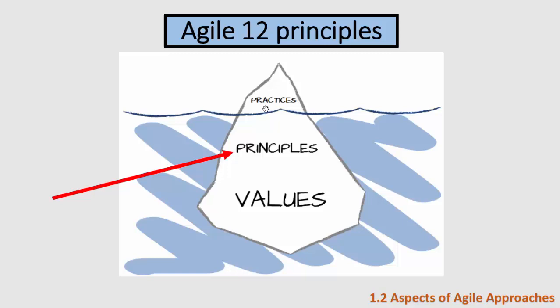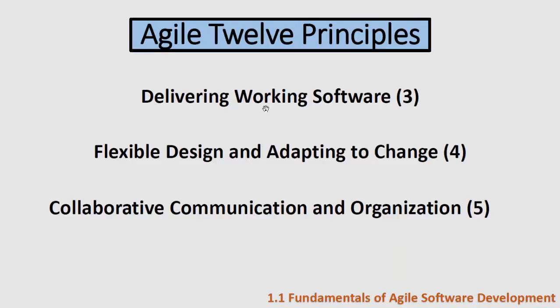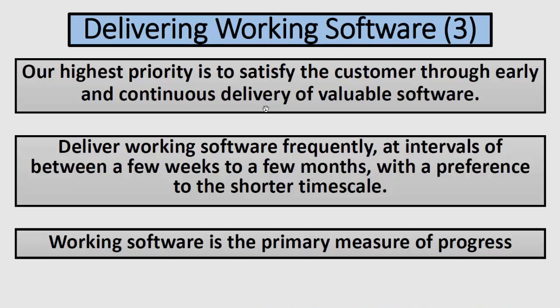Now we will talk about the 12 principles of agile. Like we said, agile is based on four values, and from those values we have 12 principles. The 12 principles can be divided into three major categories: the first three principles talk about delivering working software, then we have four principles about flexible design and adapting to change, and five principles about collaborative communication and organization.